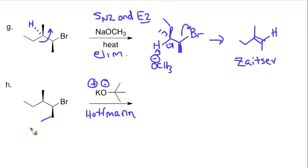So we'll just draw one of these in. And if we do the elimination with one of those beta-hydrogen, show the arrows like this.